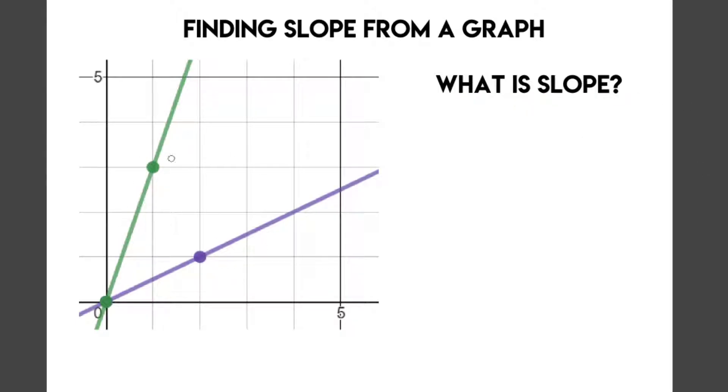So in this little graph over here, I have two different lines. I have a green line going up here, and I have a purple line going up over here. Both of these lines are going up, and they both start from the same point. They're both starting at zero. However, these lines are not the same. The green line is going up much faster than the purple line, and that's because the green line has a bigger slope.